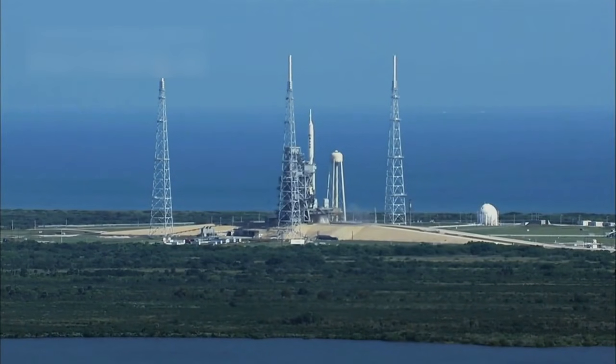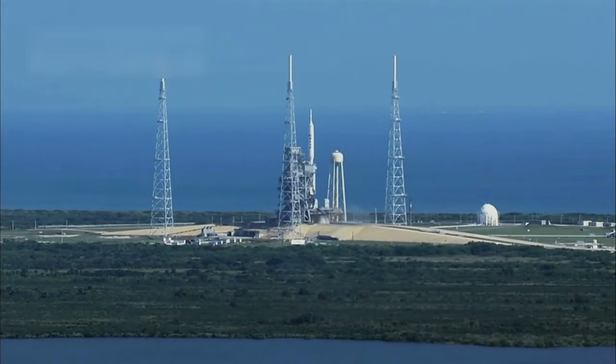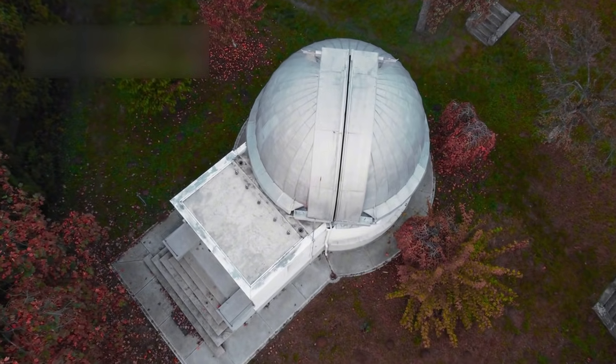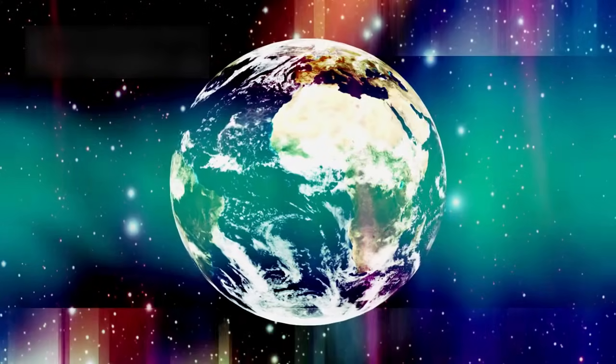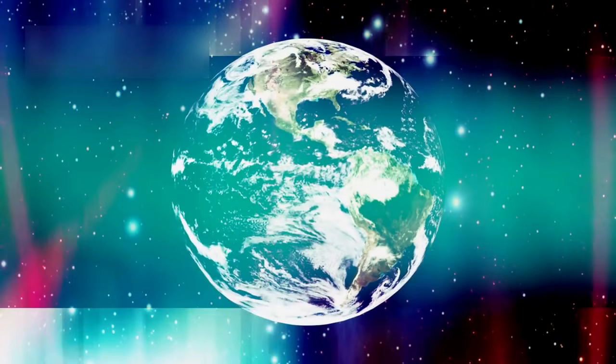Launched in September 1977, Voyager 1 surprised the scientific world. Early discoveries stunned researchers watching data under observatory domes. What began as a planetary mission became a cosmic revolution. The universe looked very different after Voyager sent its findings home.